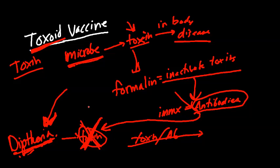These antibodies will swarm the toxin, get it removed from the body. We'll still have the diphtheria infection, but the antibodies prevent the symptoms, prevent the actual disease. This gives enough time for our body to eliminate the actual source of these toxins. Our other immune systems — innate and adaptive — will work to get rid of the actual source of this toxin, eliminating the diphtheria microbe itself. That's going to be a toxoid vaccine in general, with diphtheria as an actual example.